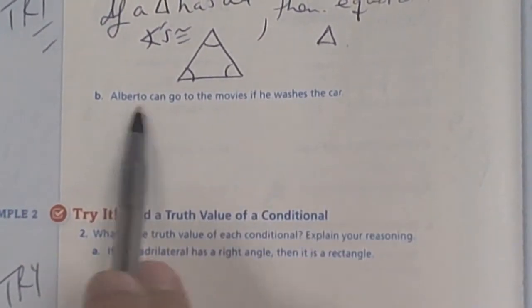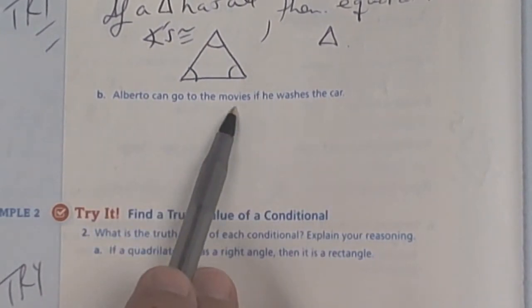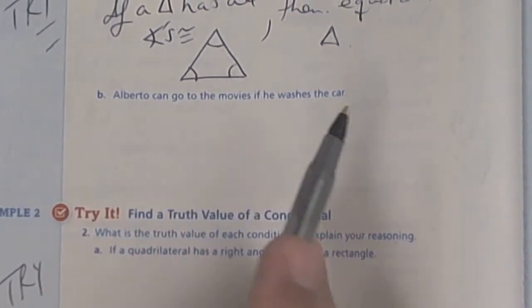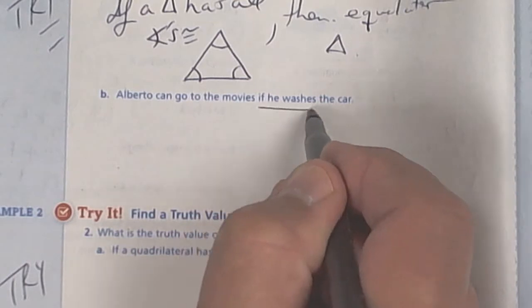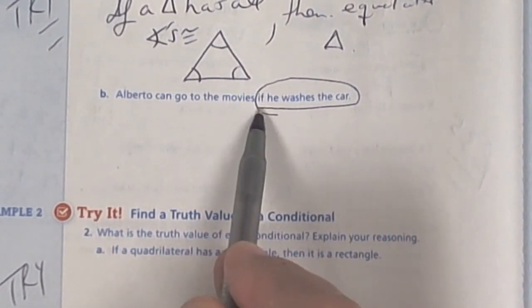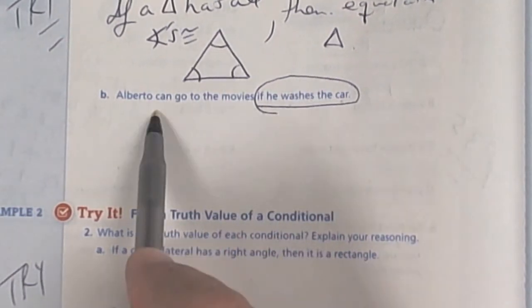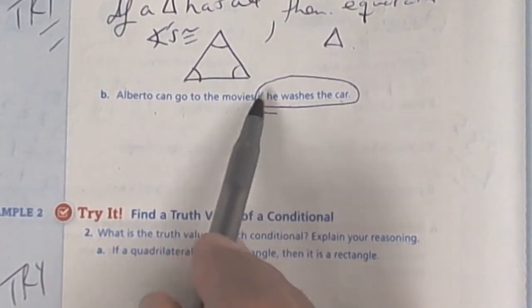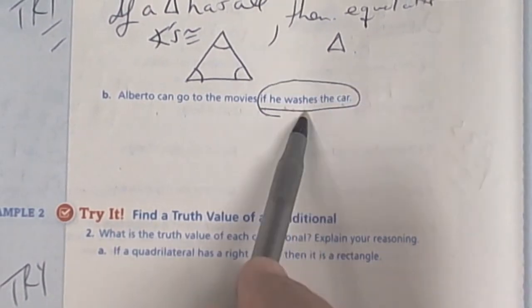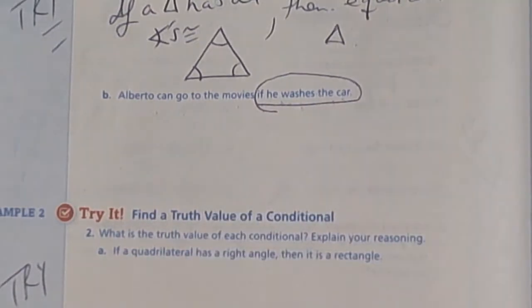Okay so the next one, you want to write it as an if-then statement. So if Alberto can go to the movies then. Oh it says now this is switched up. See how it says if he washes the car. If he washes the car, that's your beginning right there. So if Alberto washes the car, then he can go to the movies. Be careful on that one. That one's kind of tricky. They put the if part in the back. So I'm pretty sure this is going to come first. So if Alberto washes the car, then he can go to the movies. So copy that down so you know.